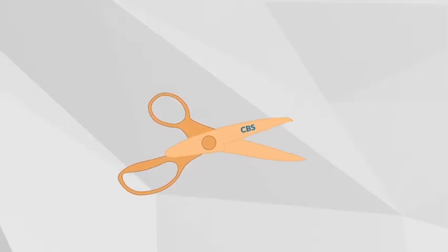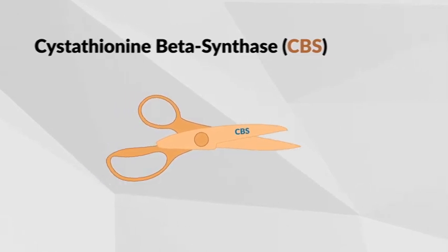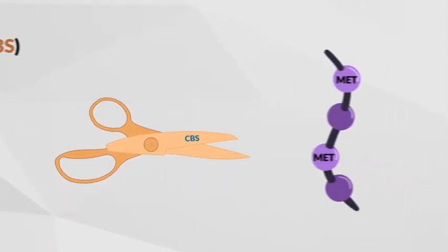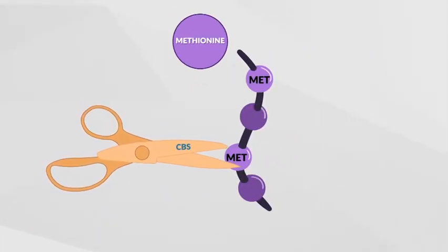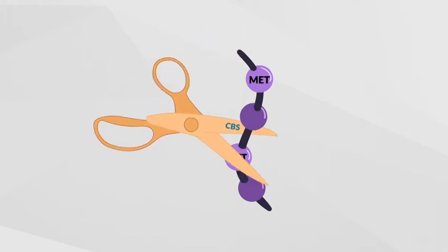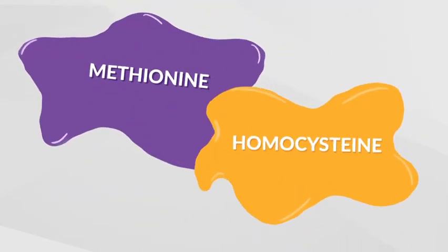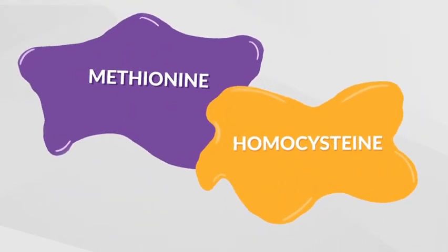Individuals with HCU have a deficiency of an enzyme called cystathionine beta-synthase or CBS. The CBS enzyme is used in the body to break down an amino acid called methionine or MET. When someone has HCU and can't break down methionine, this leads to the buildup of methionine and a substance called homocysteine in the body.